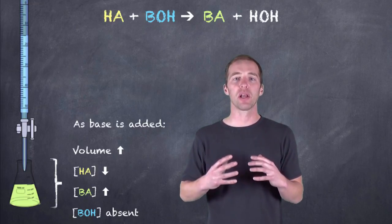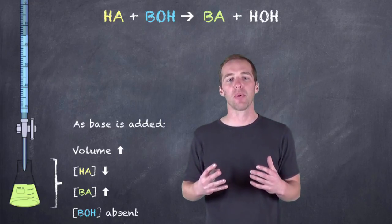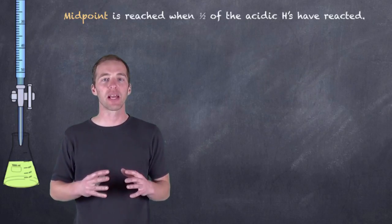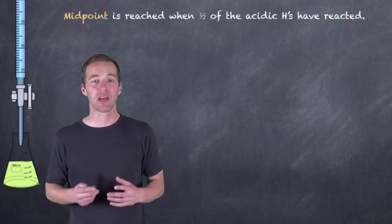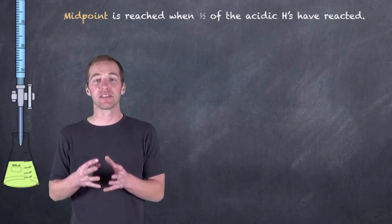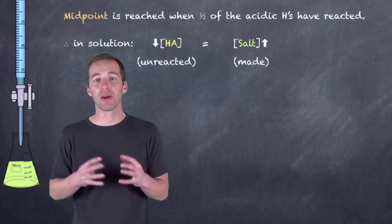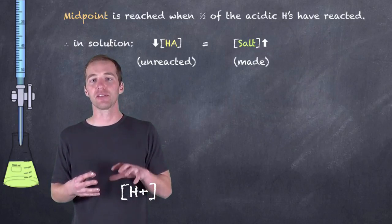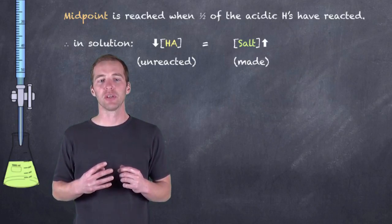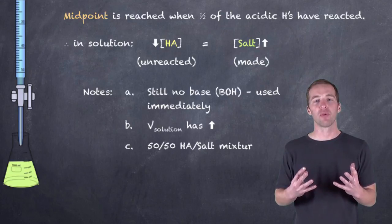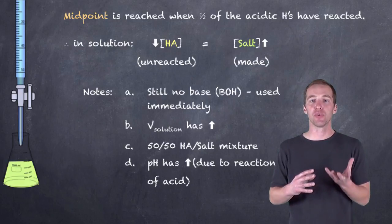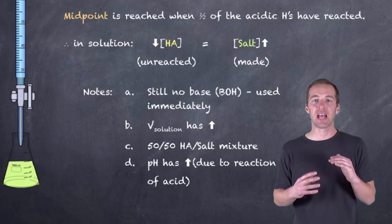As we continue to add more of the titrant, we're going to reach something called the midpoint — that's when half of the acidic hydrogens have reacted. In the case of a basic analyte, it would be half of the hydroxides. When half of them have reacted, we've reached the midpoint. We still have half of the acidic hydrogens unreacted, and we have a concentration of salt. At the midpoint, those two concentrations are equal. The concentration of hydrogen ions has come down, the concentration of salt has gone up, and at midpoint they are equal. There's still no base in the solution because as soon as it's introduced, it's used. The volume continues to increase and the pH has started to rise.